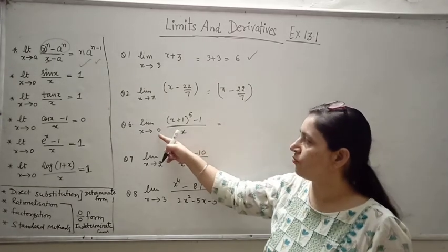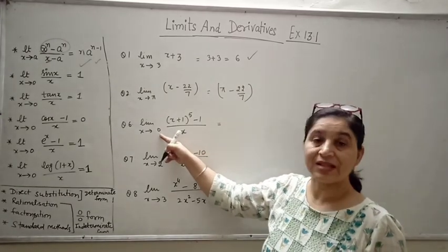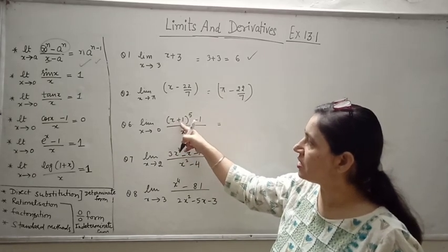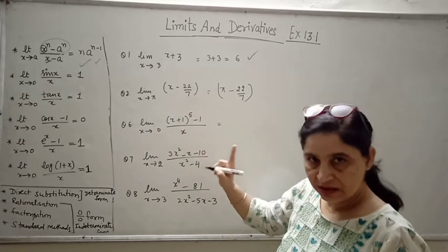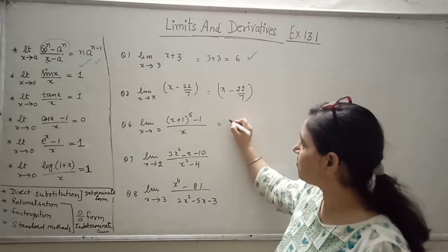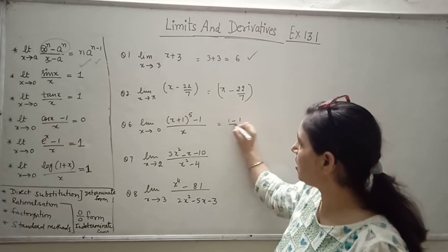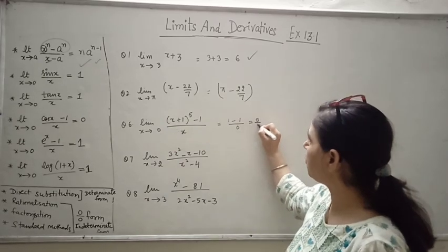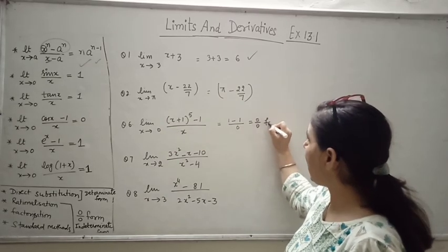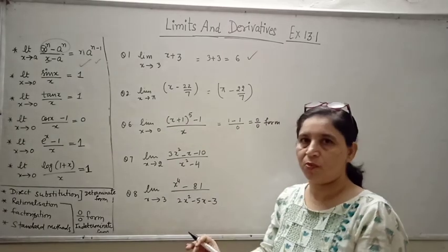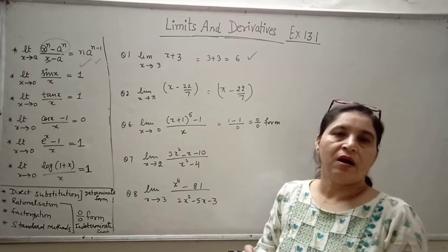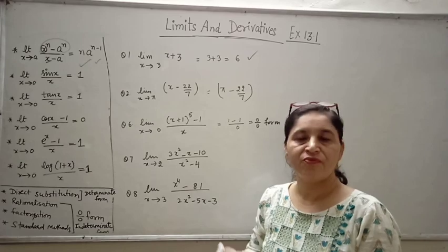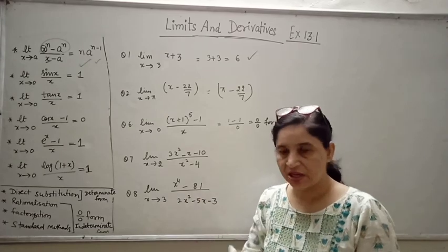Now if we put the value x equal to 0 here, we get 0 plus 1 raised to power 5, that is 1 raised to power 5, which is 1 minus 1, giving 0 upon 0 form with x tending to 0. As I told you, if you get 0/0 form, then you should plan for either rationalization, factorization, or any simplification.